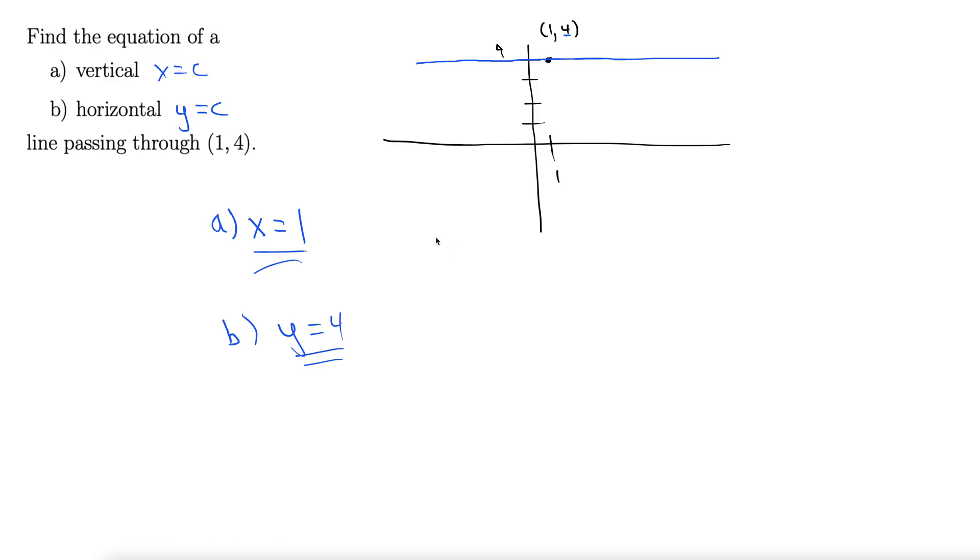And if you wanted to get away from drawing the point on a graph, you could just look at this and kind of know that the vertical line, x equals 1, vertical. And the horizontal goes with the y value, y equals 4, horizontal.